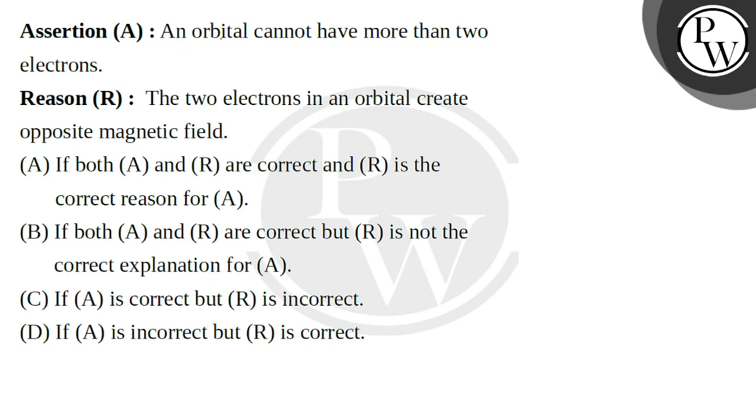Assertion says that an orbital cannot have more than two electrons. This is true according to Pauli's exclusion principle. This principle says that in an orbital you can only have two electrons.